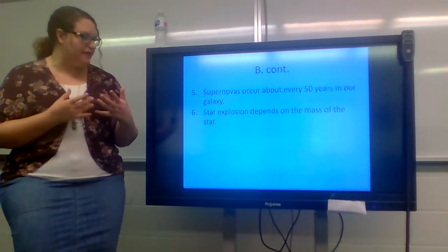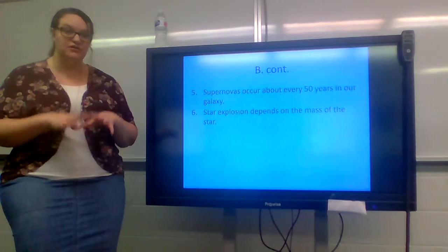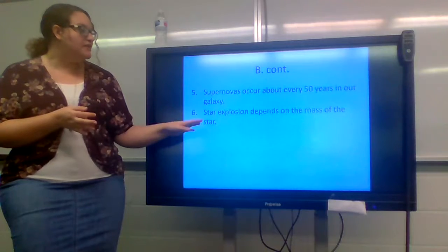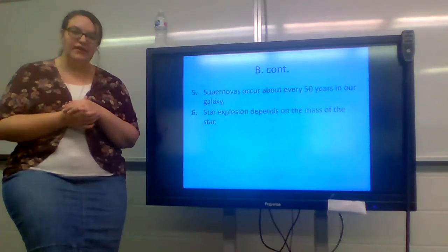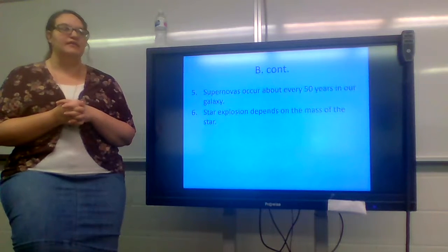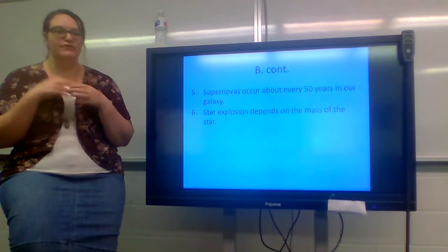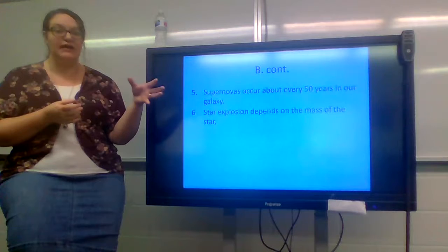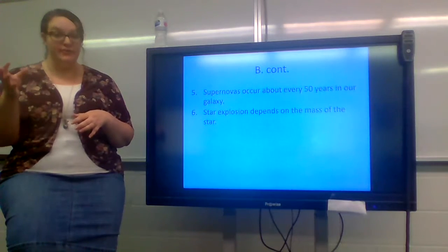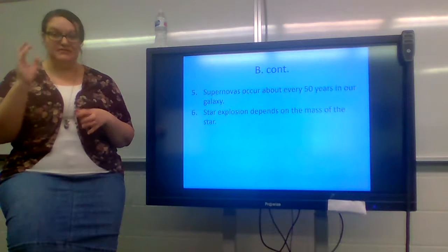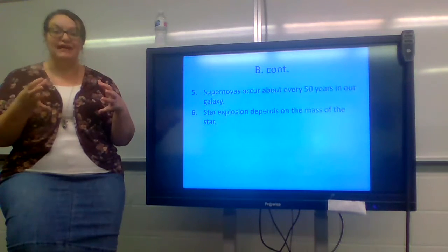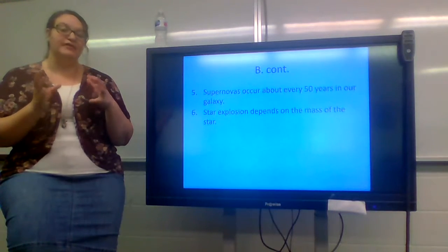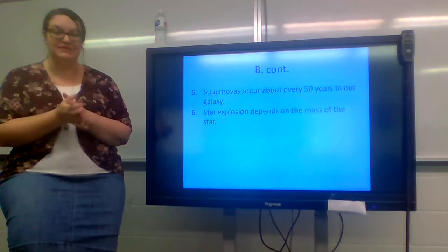Supernovas occur about every 50 years in our galaxy. That would be the Milky Way galaxy. We're talking about the Milky Way galaxy where we are found. Stellar explosions depend on the mass of a star. It's like if you drop an egg off of the tower versus a watermelon off of the tower. Imagine the tower down the street. If you were to drop an egg off of that, yeah, it's going to splat. It's going to be messy. But if you drop a watermelon off of that, it's going to be a massive mess that you have to clean up. It's going to explode out much further because it has more mass. It's bigger. The larger the star is, the more explosive power it can have behind it if it happens to explode and become a supernova.